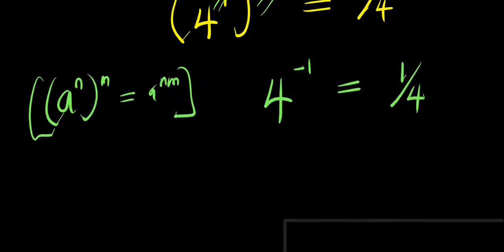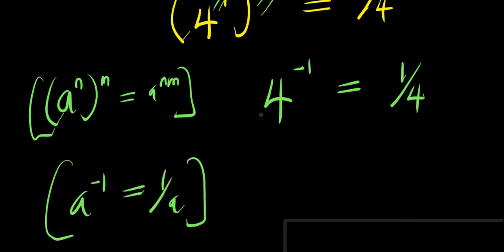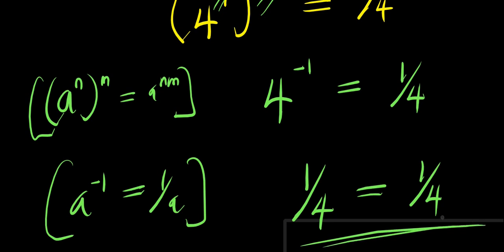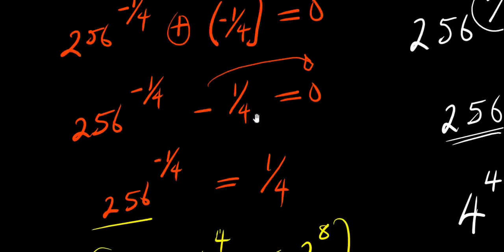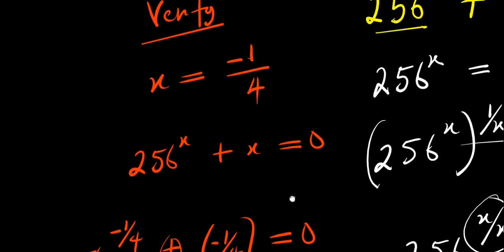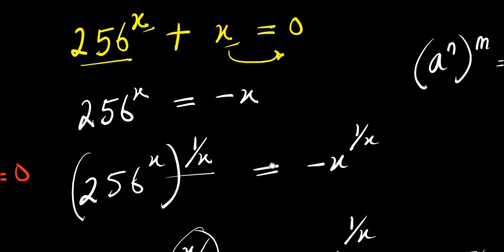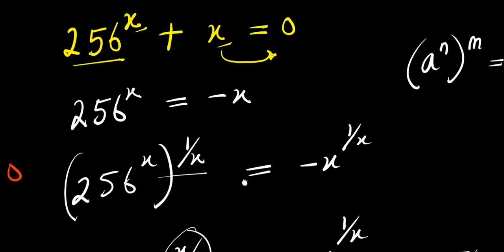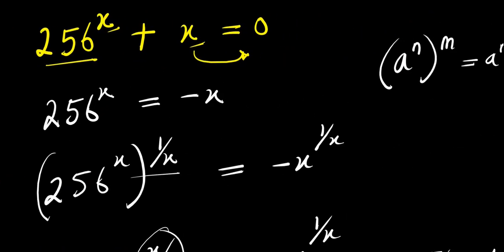And what is the meaning of 4 power negative 1? Remember, a power negative 1 equals 1 over a. So 4 power negative 1 is the same thing as 1 over 4, equals 1 over 4. Ladies and gentlemen, this is such an interesting exponential problem. Don't forget to subscribe and share this video. Thank you, thank you and goodbye.